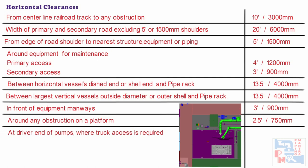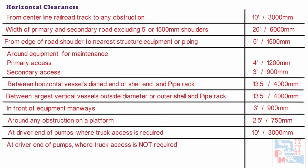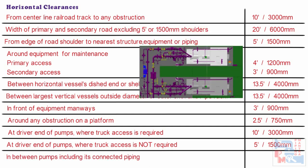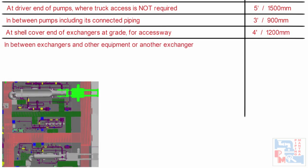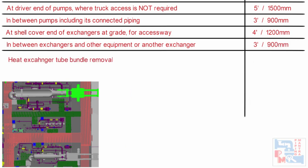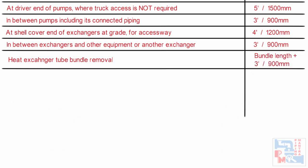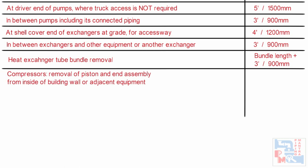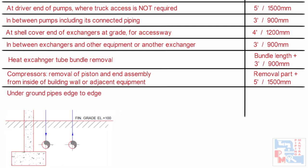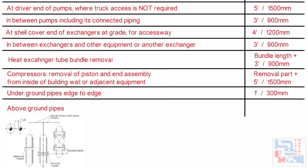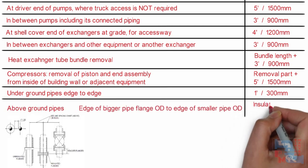Distance between horizontal vessel's dished end or shell and rack — 13.5 feet or 4 meters. Distance between largest vertical vessel or tower outside diameter and pipe rack — 13.5 feet or 4 meters. At driver end of pumps where truck access is required — 10 feet or 3 meters. At driver end of pumps where truck access is not required — 5 feet or 1.5 meters. In between pumps including connected piping — 3 feet or 900 mm. At shell cover end of exchanger at grade for access way — 4 feet or 1.2 meters. In between exchangers and other equipment — 3 feet or 900 mm. Heat exchanger tube bundle removal space — bundle length plus 3 feet or 900 mm. Compressor piston and end assembly removal from inside building wall or adjacent equipment — removal part plus 5 feet or 1500 mm. Underground pipes: edge to edge, large flange OD to edge of small pipe OD plus insulation plus 25 mm.